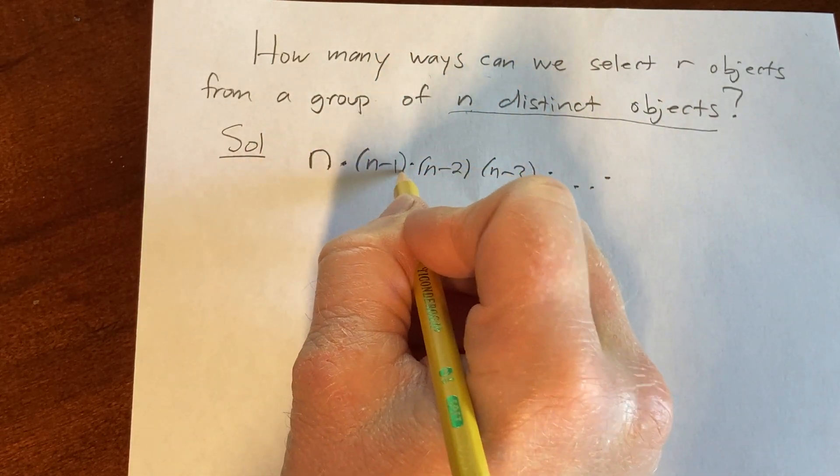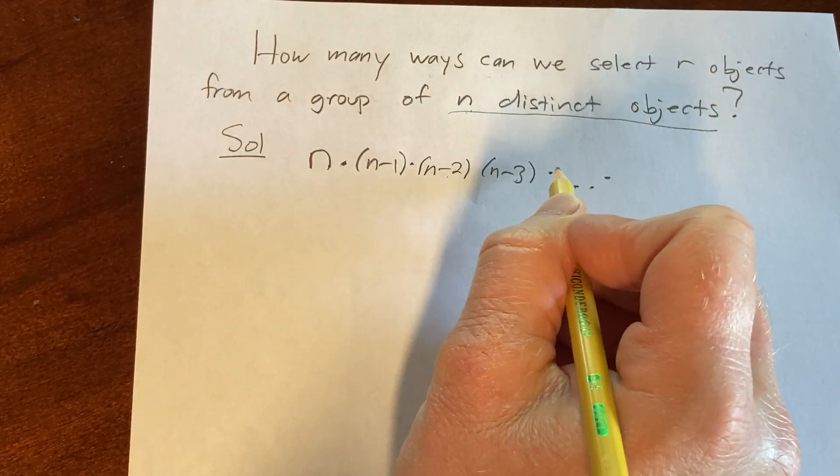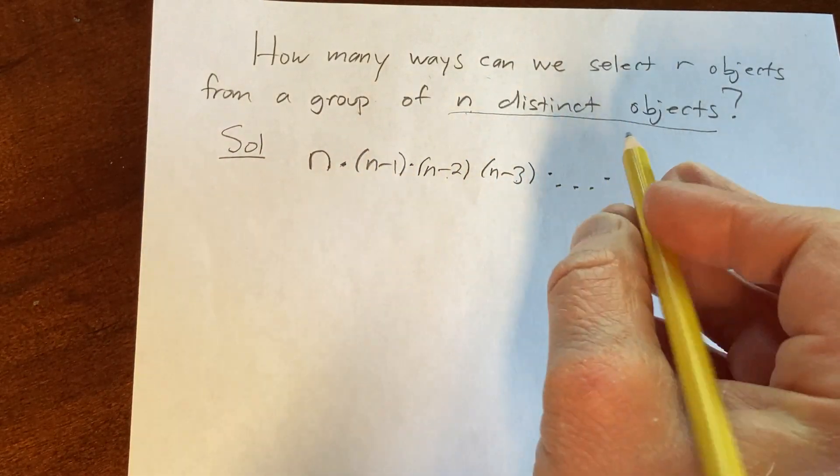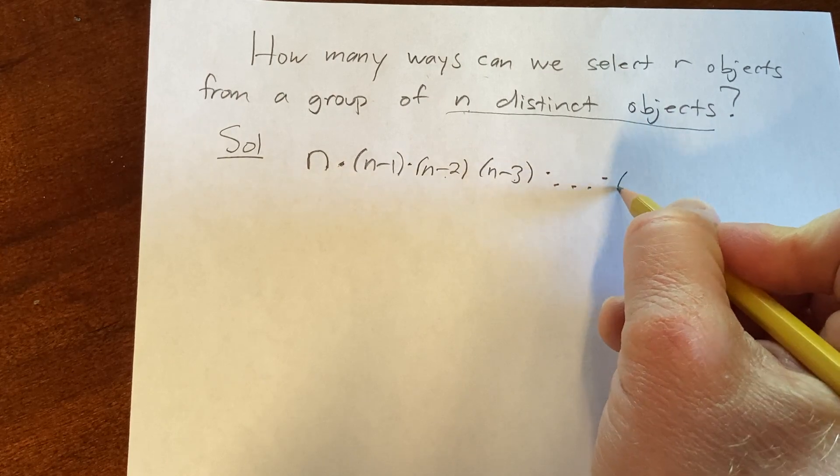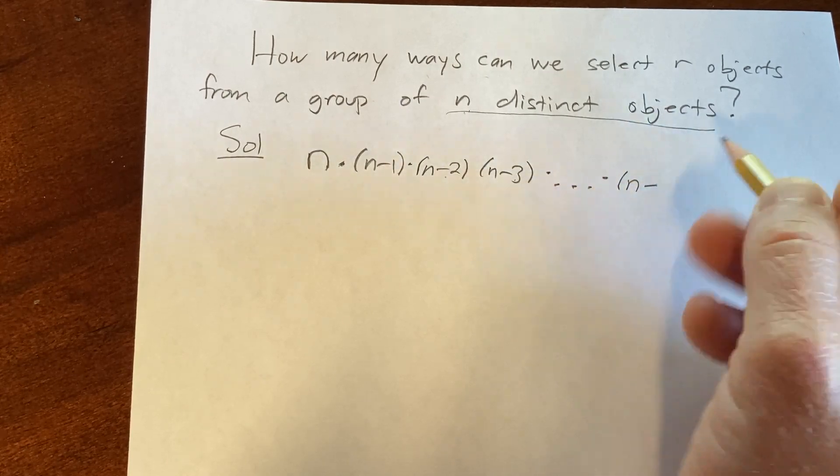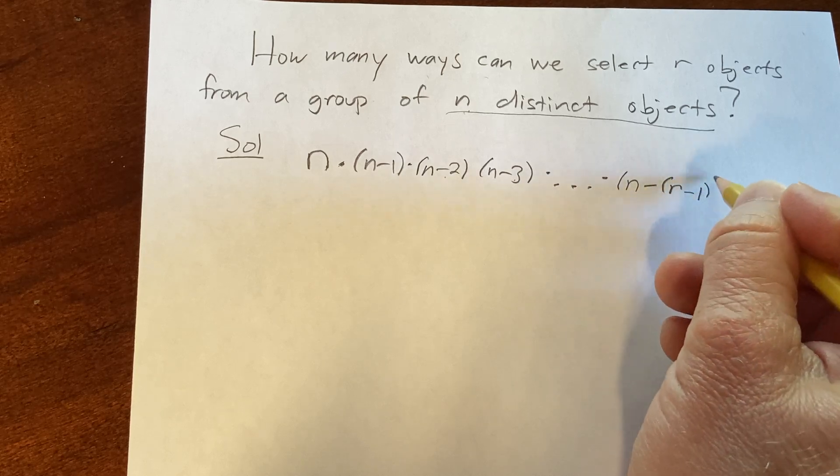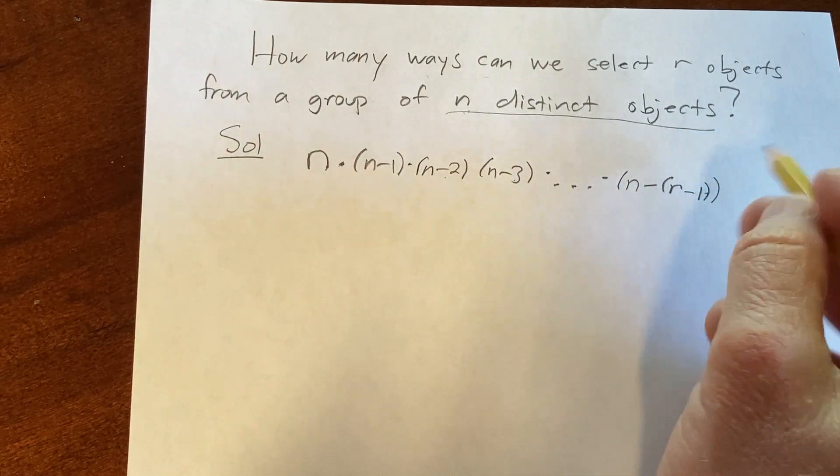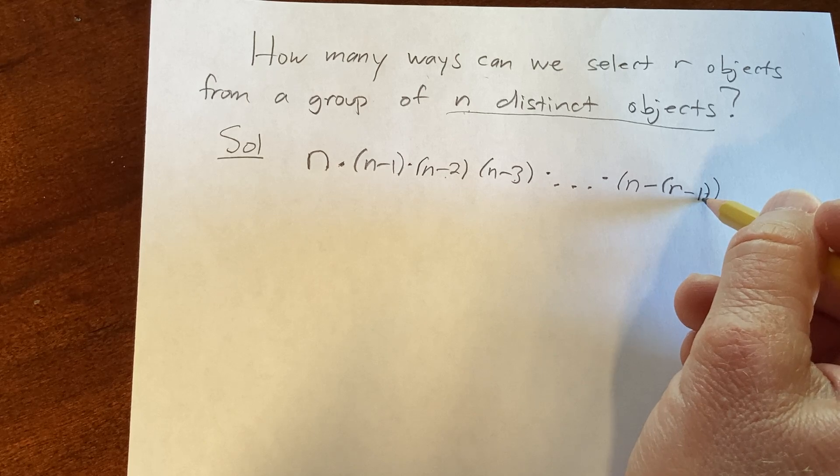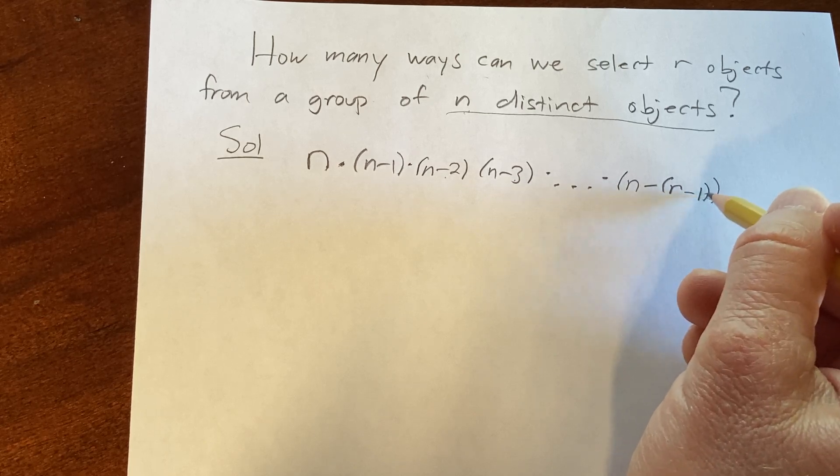So n, n minus 1, n minus 2, n minus 3, times dot dot dot times, and then we're going to stop at n minus, and it's going to be r minus 1. That's what we're going to stop. And the reason is at this point, we haven't picked r objects yet.